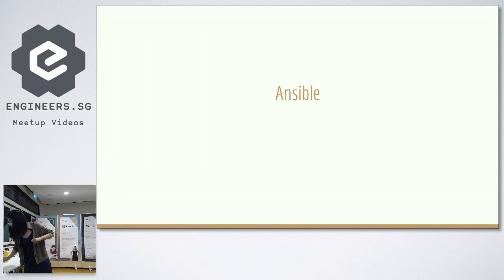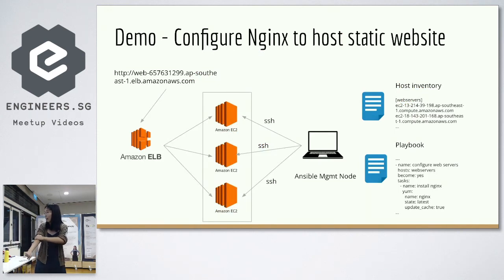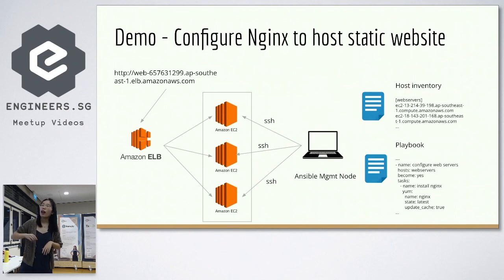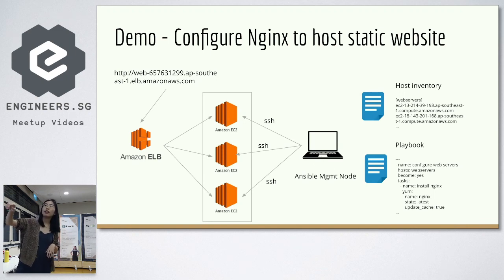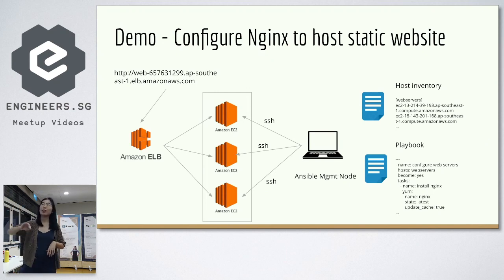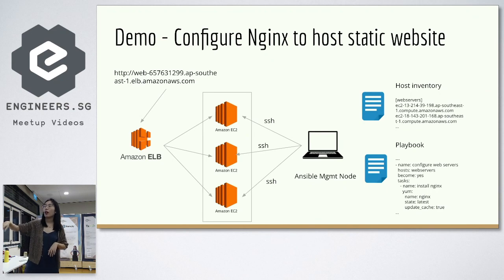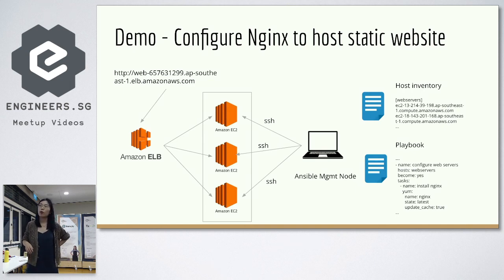Now let's come to Ansible. We'll show you a demo in a screen recording to configure Nginx to host a static website. This is the setup I have: three EC2 servers in AWS. They are all behind a load balancer, which is public-facing and has a DNS name. Once everything is configured properly, we can go to the browser and hit this URL. This Ansible management node is actually my laptop. You can reach the EC2 instances via SSH. There are two Ansible code files: the first one is the host inventory, which tells Ansible how to connect to the hosts, and the other one is the playbook, which tells Ansible how to configure the servers.